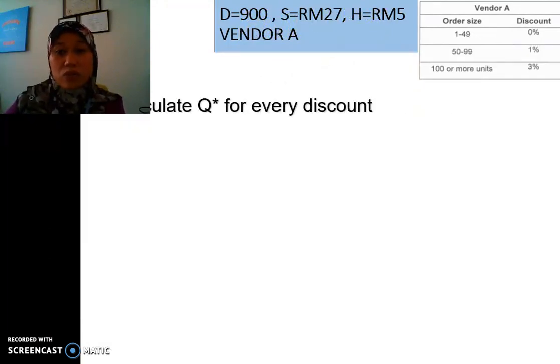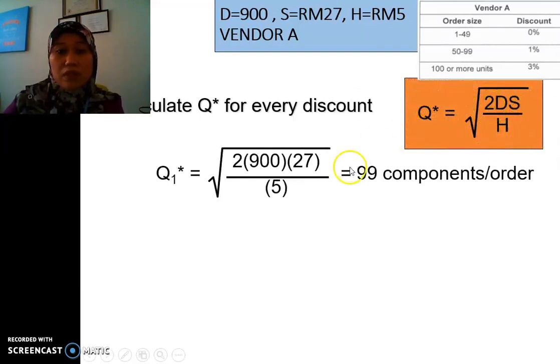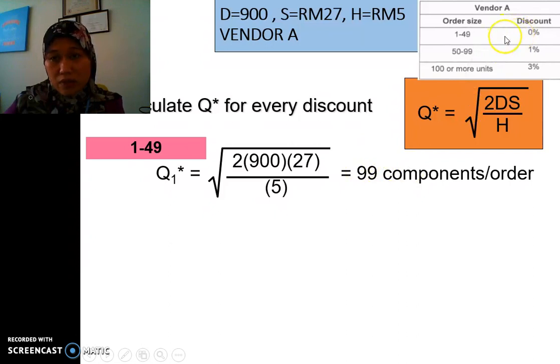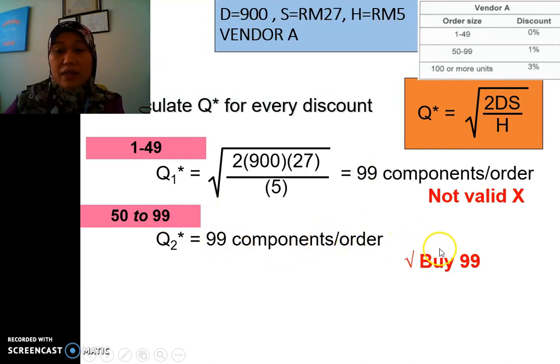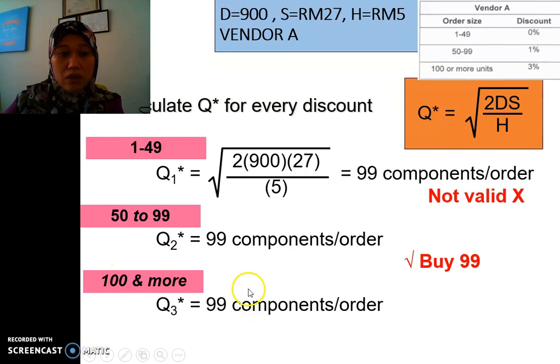We have to find the Q, the optimal Q that we need to order. So we have all the size for 1 to 49. We cannot buy with this rule. So it's invalid. So we don't need to calculate the total cost at all. And then for the second one, 50 to 99. This 99 is within the range. So we can buy at 99. And then for the third one, it's 100 and more. So we need to do some adjustment. We need to change or adjust to the minimum that we can buy here, so 100.